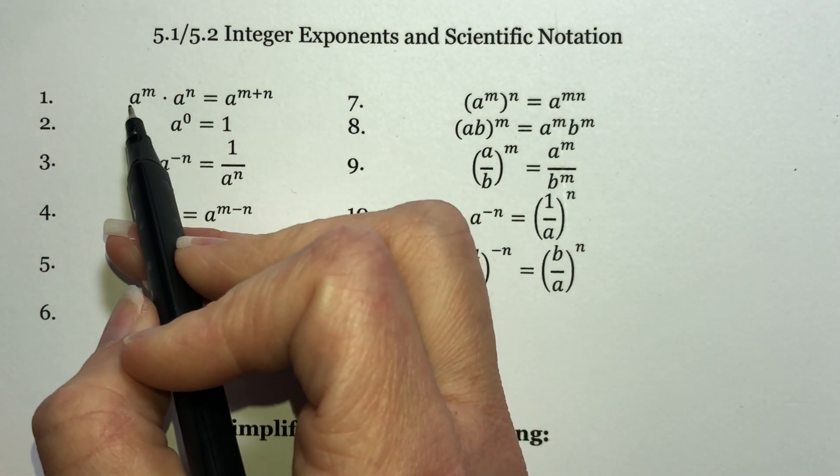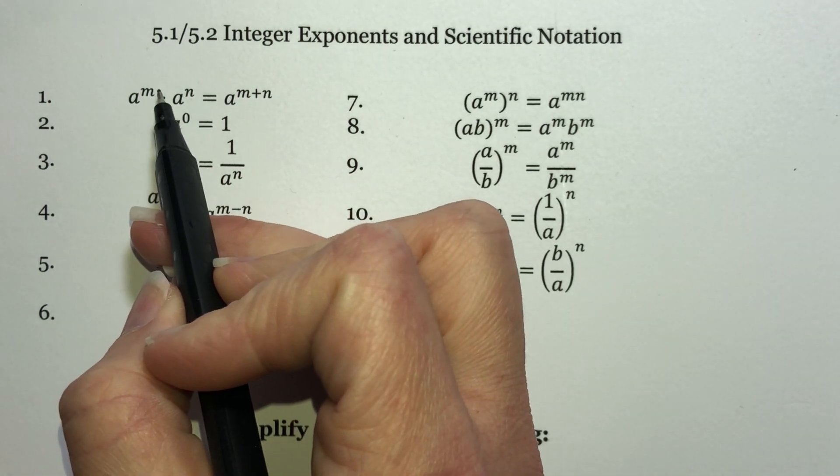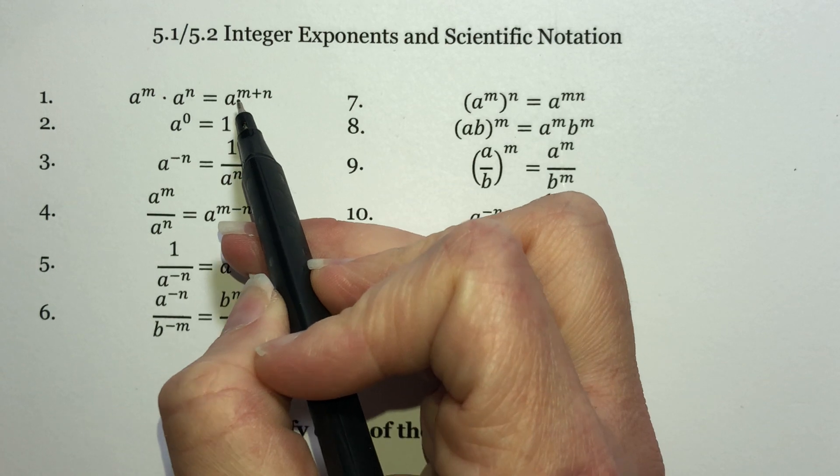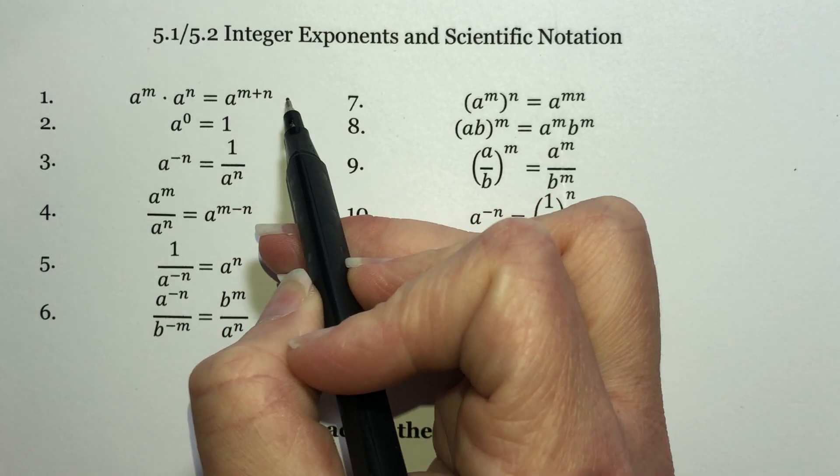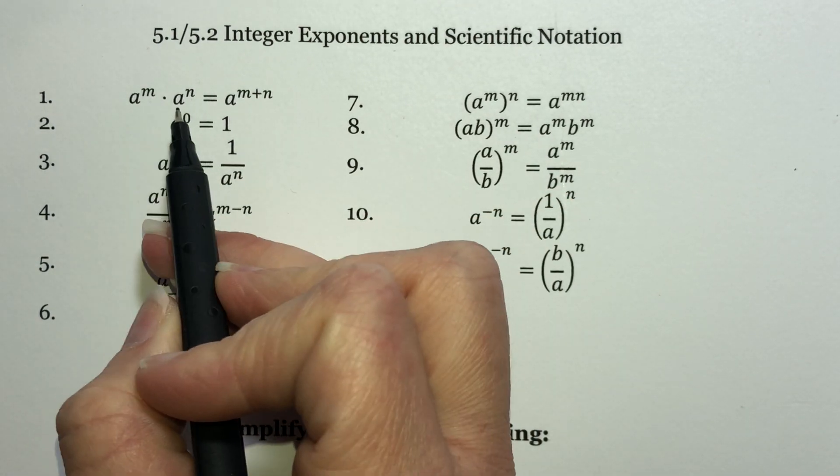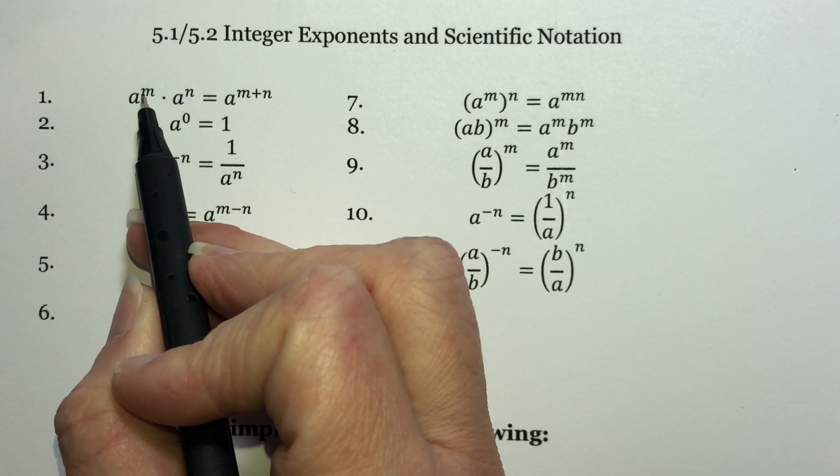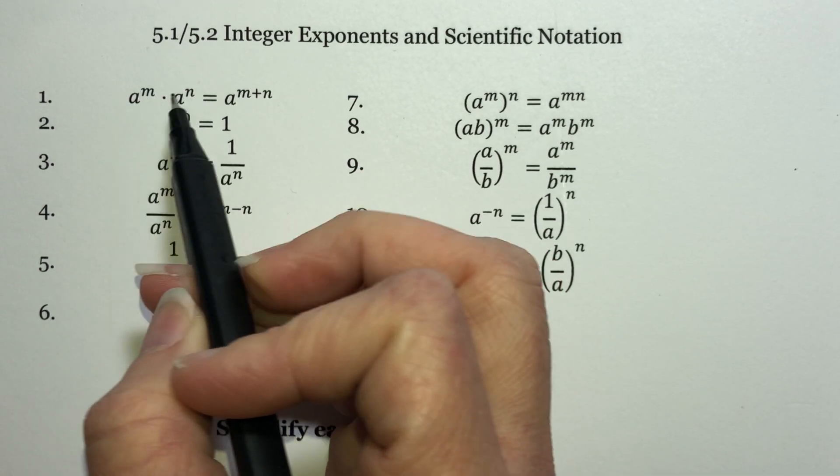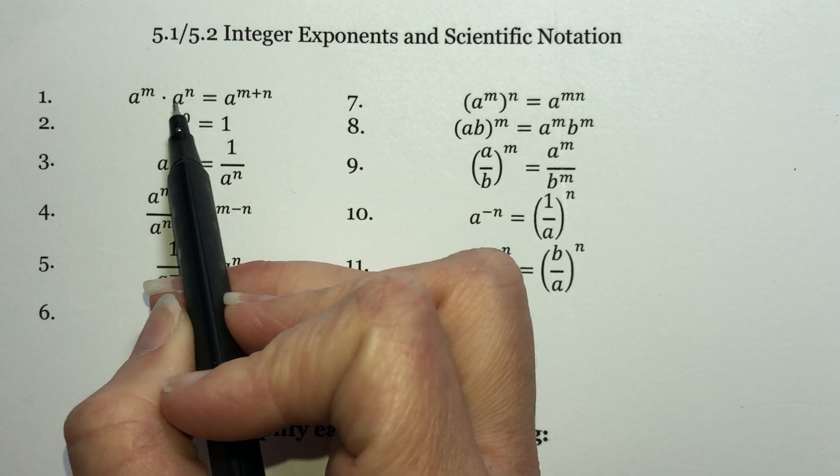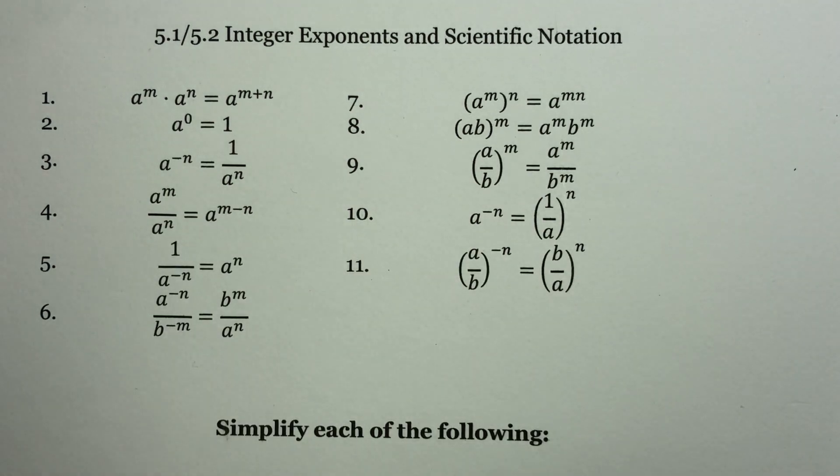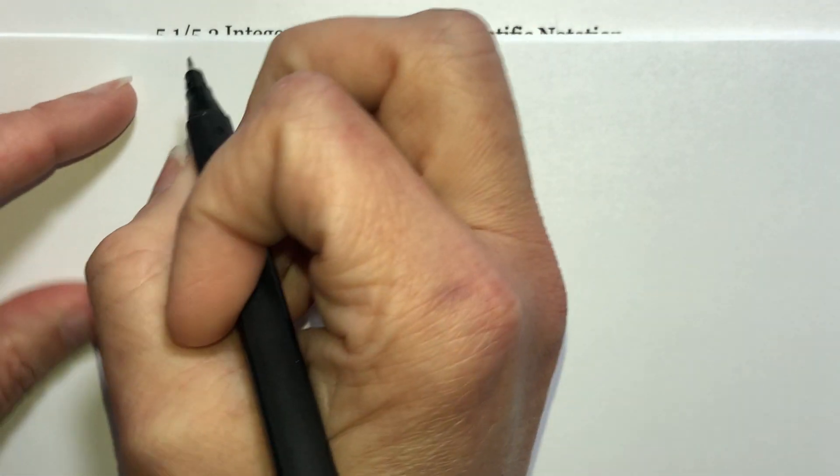What we have here on the first one is a to the m power times a to the n power is the same thing as a to the m plus n. Notice that your bases are the same. That's what we call the number on the bottom. And our exponents, they could be the same, but most of the time they're going to be different. If you're multiplying two things with the same base, then you get to add their exponents. Now, what I can do is I can show you why this might be true.